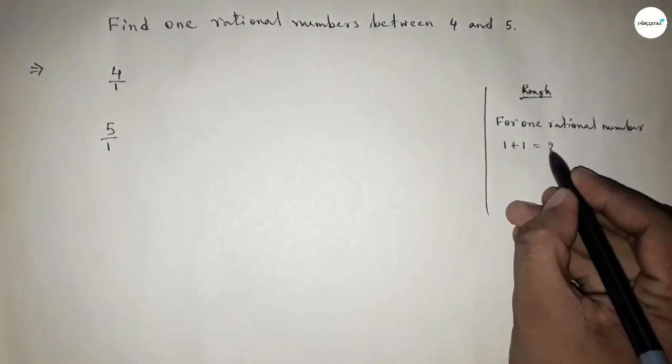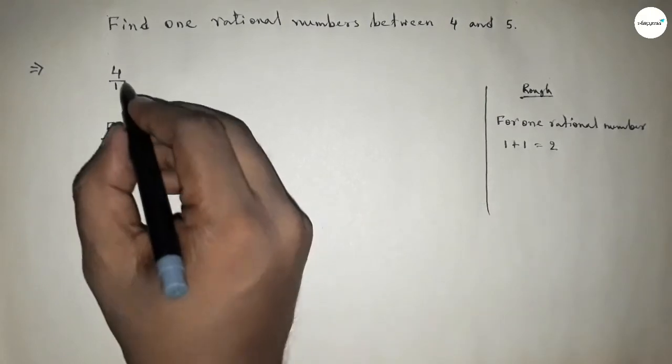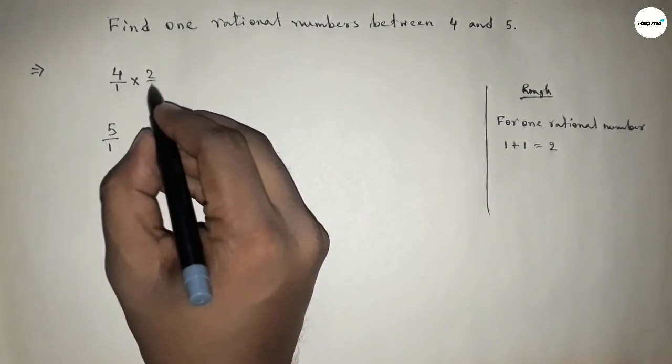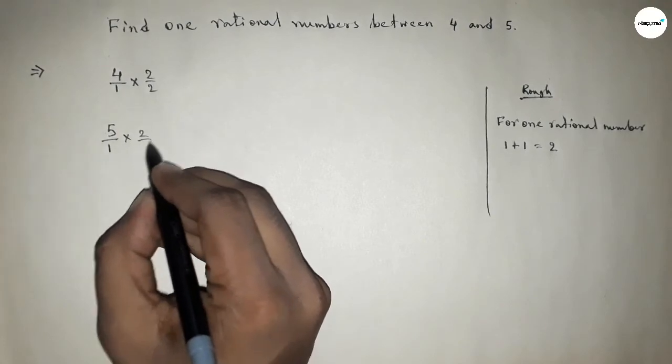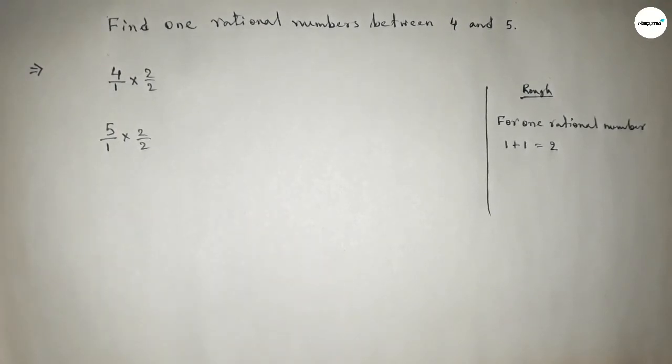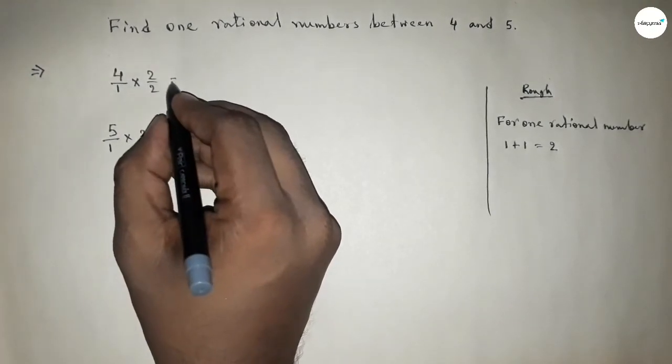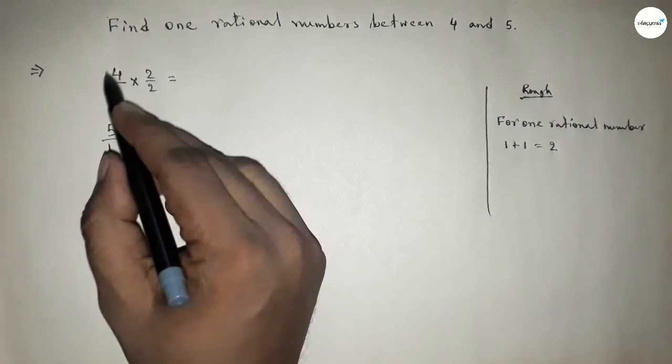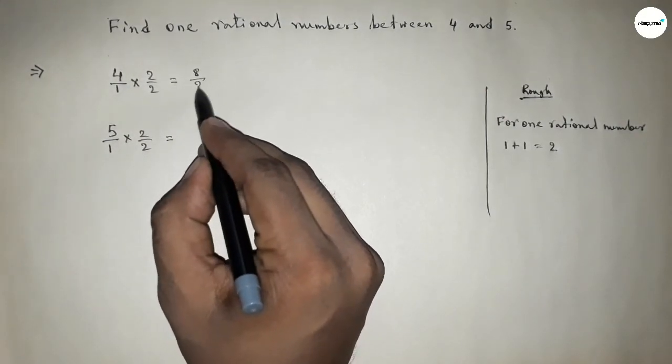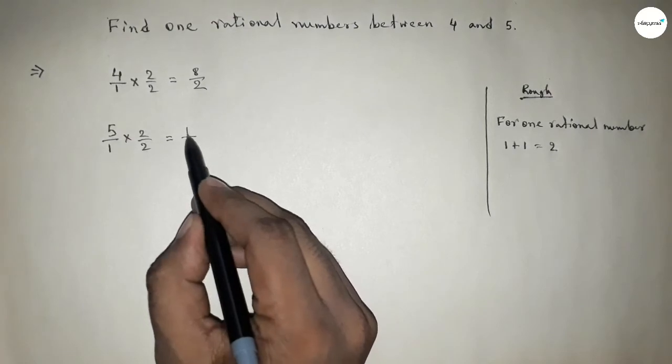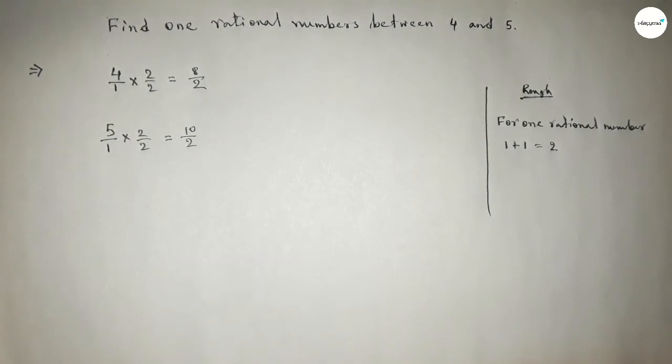And here also. And this is 8/2 and this is 10/2. Now between 8 and 10 we can find one natural number: 8, 9, 10.